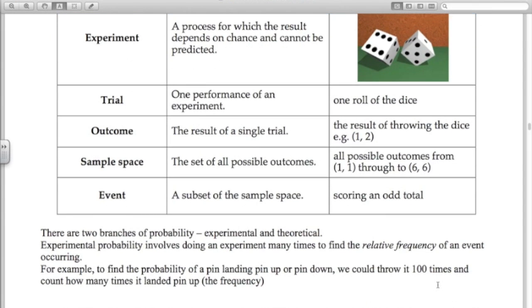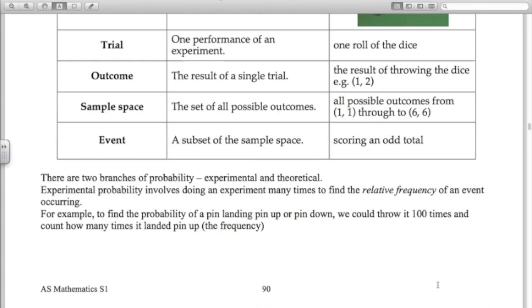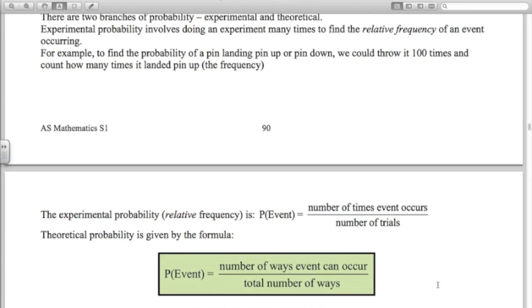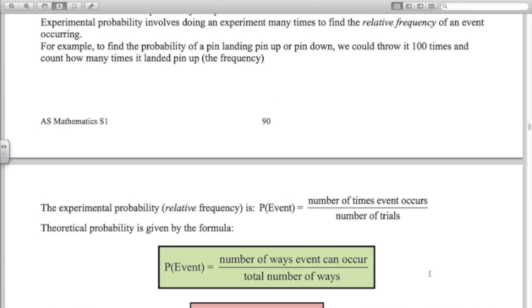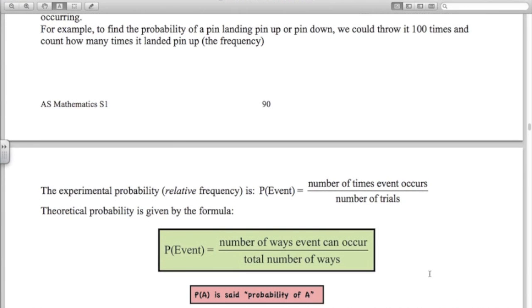There's two branches of probability, experimental and theoretical. Experimental probabilities, we're doing experiments with, say, tossing a pin and counting the number of times it lands pin up or pin down. But in this case, we're going to deal with theoretical probability. So here's the formula for theoretical probability. The number of ways an event can occur divided by the total number of ways. So P of A, you're going to see this a lot, is said the probability of A.